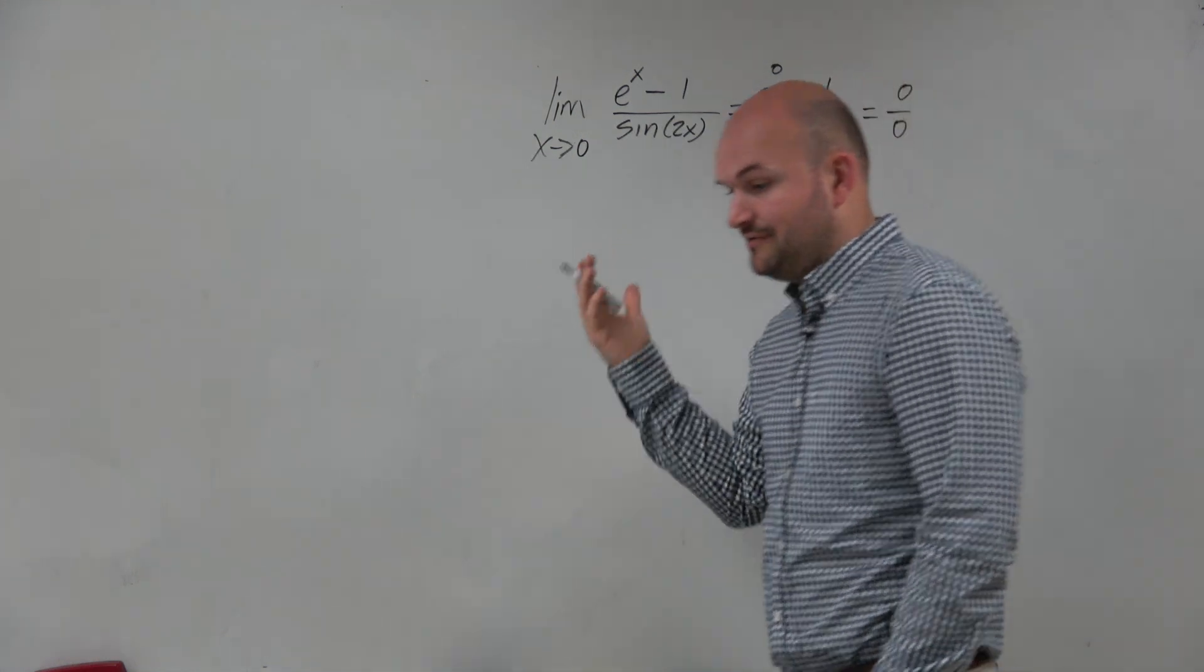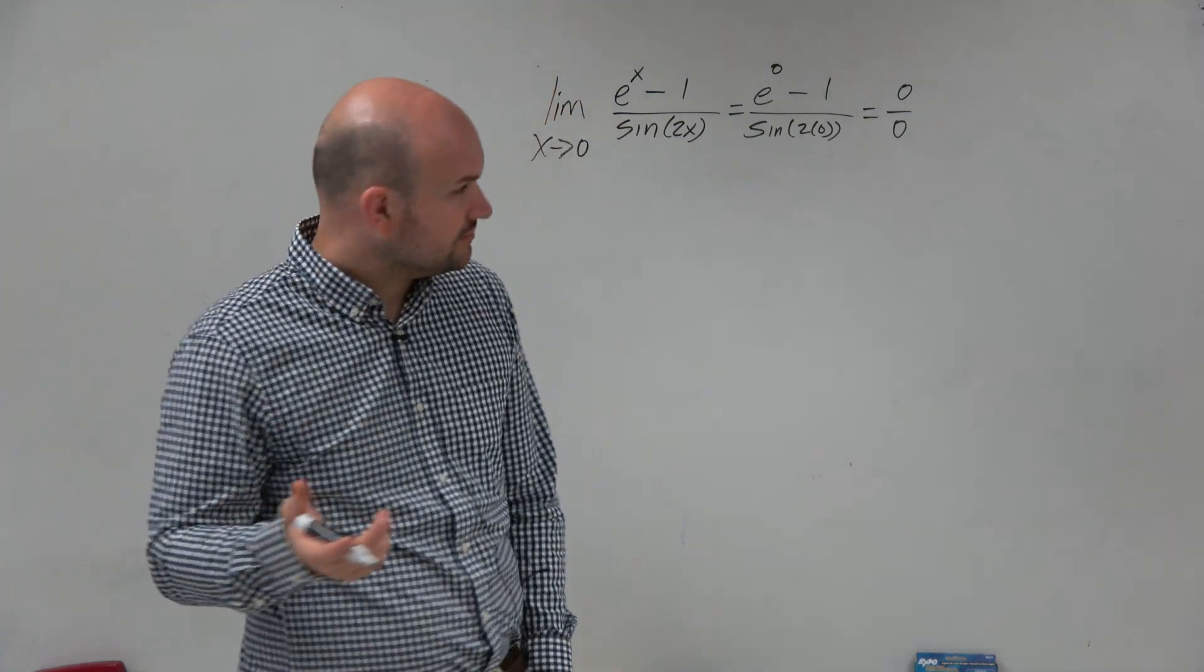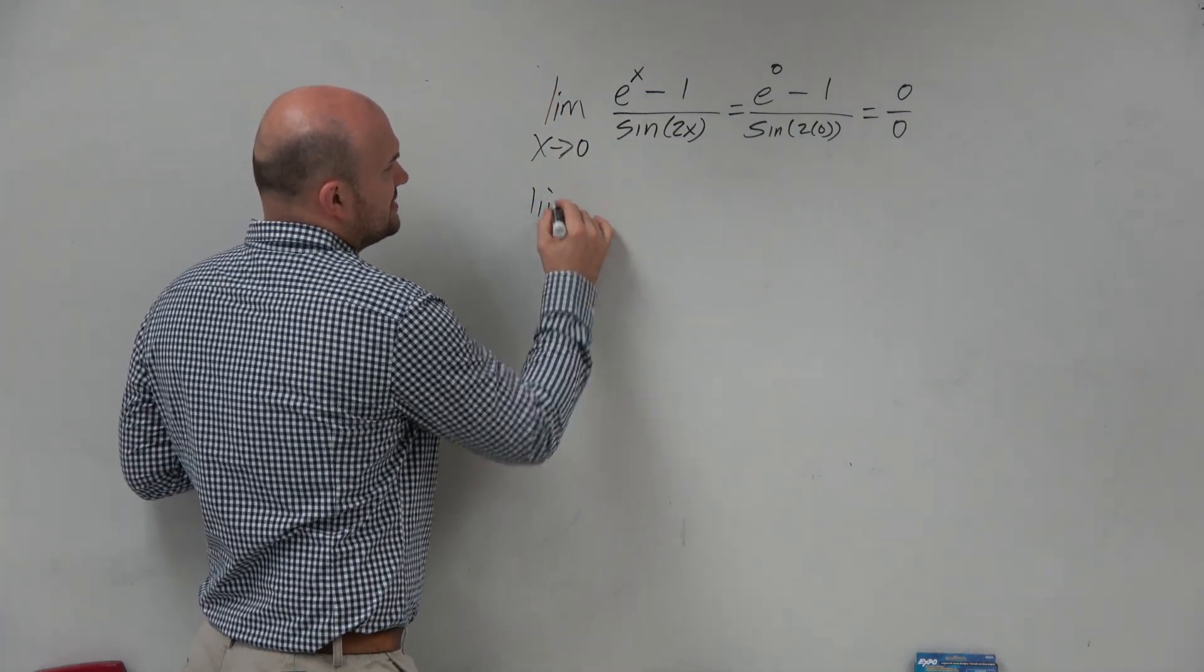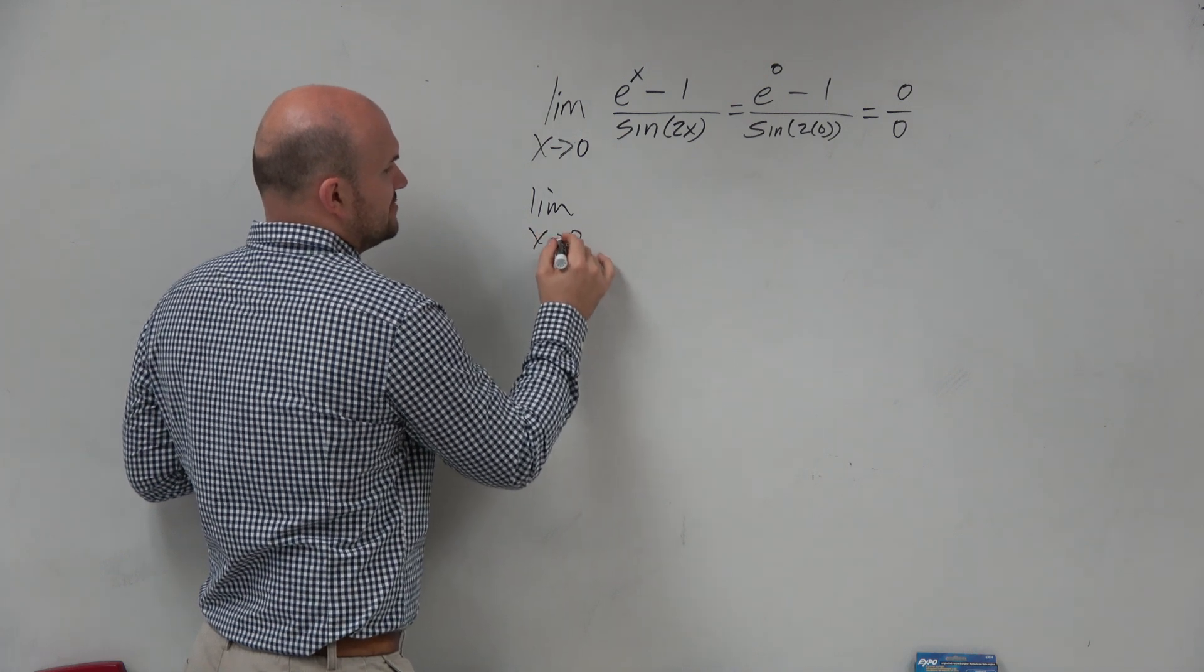So therefore, again, we have an indeterminate form. So therefore, we're going to want to take the derivative of the numerator and the denominator, in this case with respect to x.